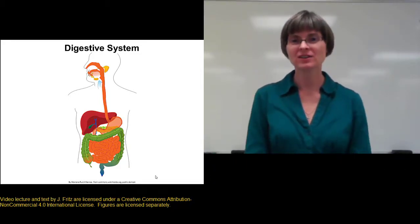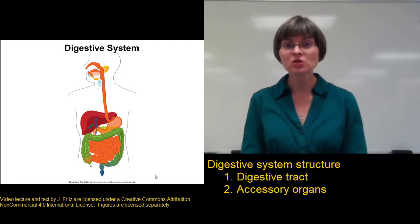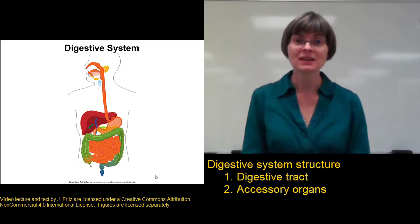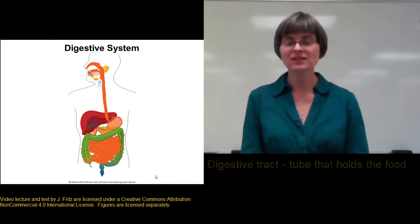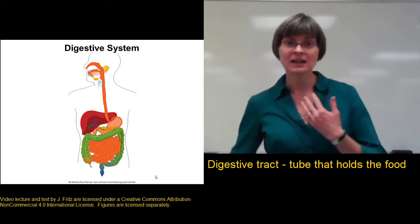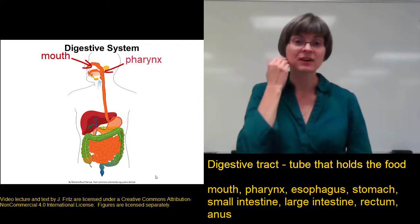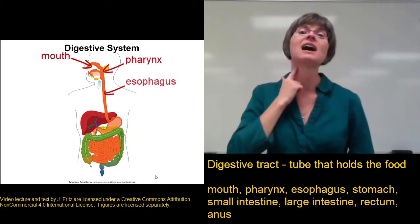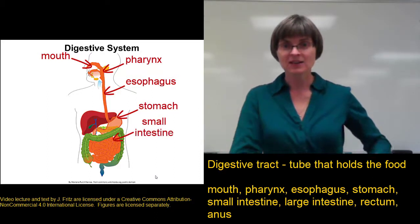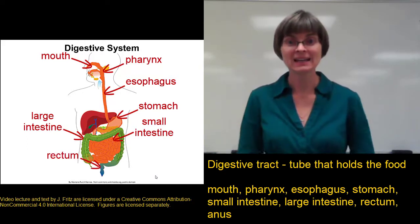Let's take a look at the structure of the digestive system. We can divide the organs of the digestive system into two main categories: the first being the digestive tract, and the other being the accessory organs. The digestive tract is the one-way tube that food travels through from when it goes into your mouth until the waste comes out the anus. So that includes your mouth, your pharynx or throat, the esophagus that carries food down to the stomach, and then into the small intestine, the large intestine, finally into the rectum, and out the anus.